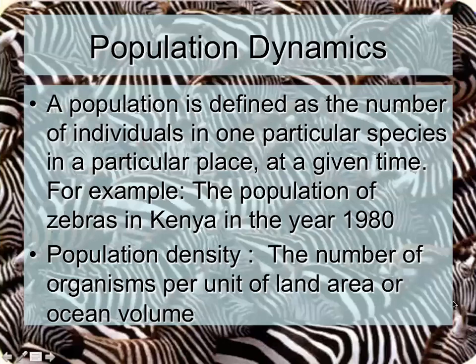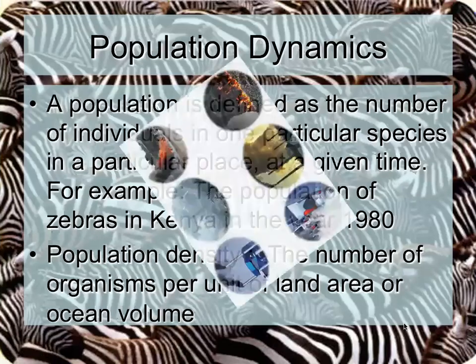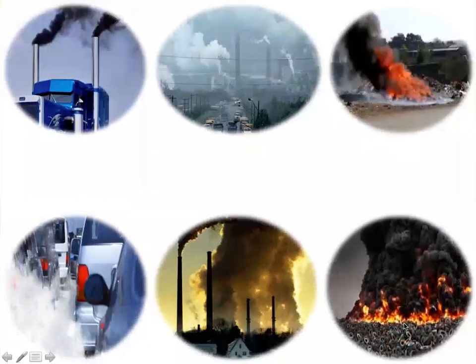All biogeochemical cycles, including various essential nutrients required by plants and animals, and including all biotic and abiotic factors, have been explained in detail. Our next topic is air pollution.